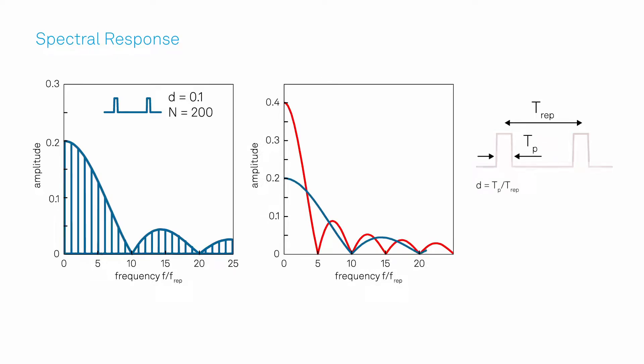The smaller the duty cycle, the more harmonics contribute to the signal. This response function matches the signal content of pulsed signals. The information is distributed in the frequency domain and is very effectively captured by the boxcar aperture.